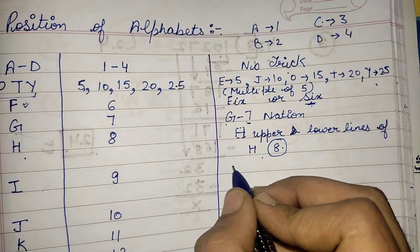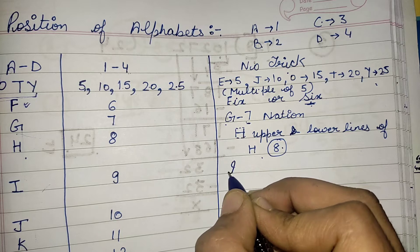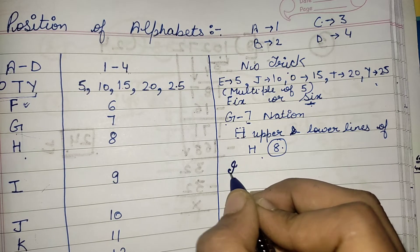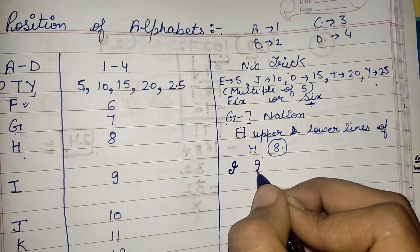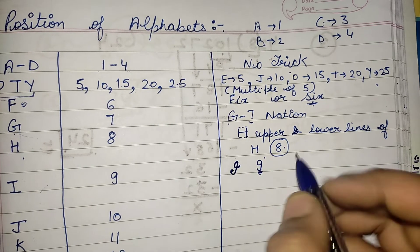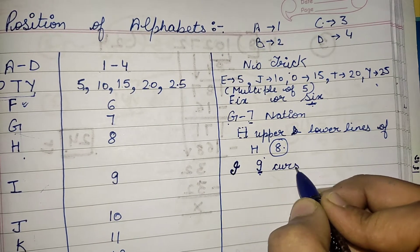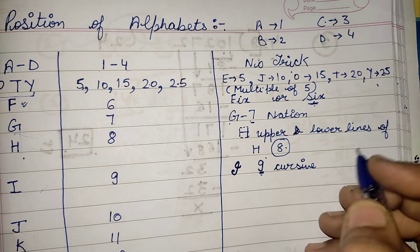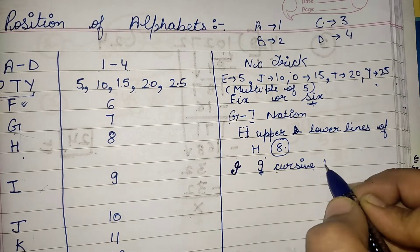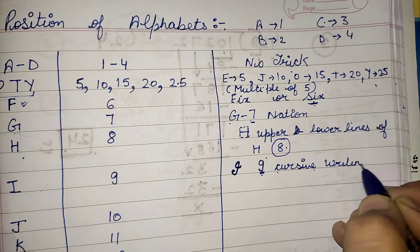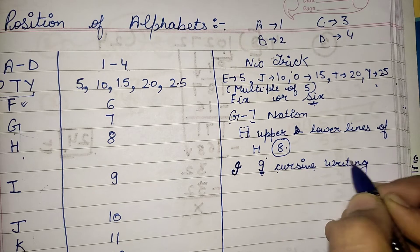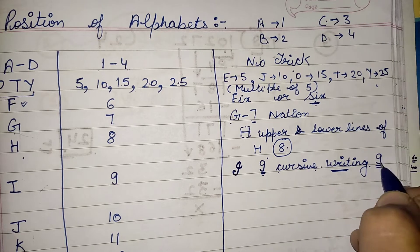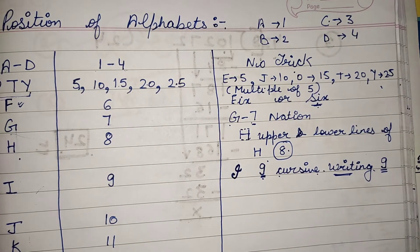Next is I. In cursive handwriting, we write I in a way that is somewhat similar to the mathematical number nine. So with cursive writing we can remember that the position of I is equal to nine.